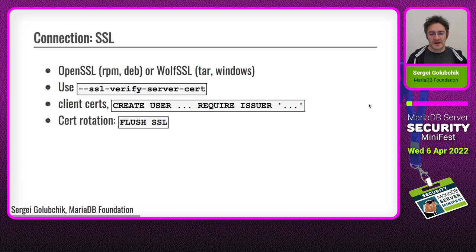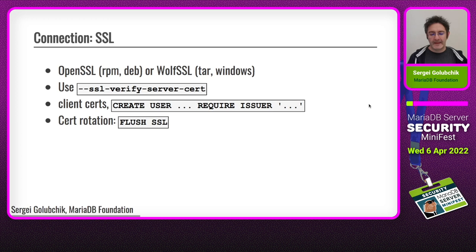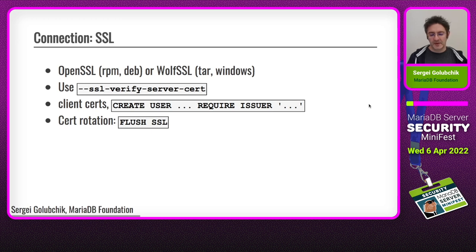The last point on this slide: we have actually had users who periodically change certificates — they have a policy that every certificate must be changed with some specific frequency. They regenerate and replace all certificate files but do not want to restart the MariaDB server to start using new files. That's why we implemented the FLUSH SSL command. When issued, the server re-reads all SSL certificates and starts using new ones for all new connections. This allows SSL certificate rotation without restarting the MariaDB server.